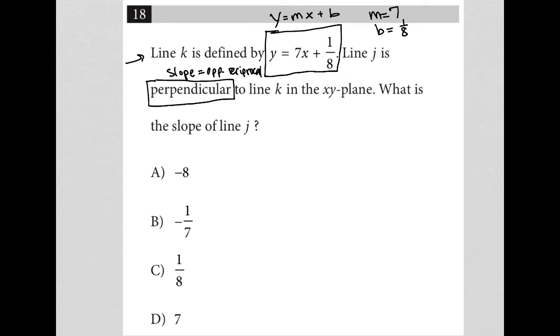So for line J, our slope is equal to negative 1/7 because negative 1/7 is the opposite reciprocal of 7.